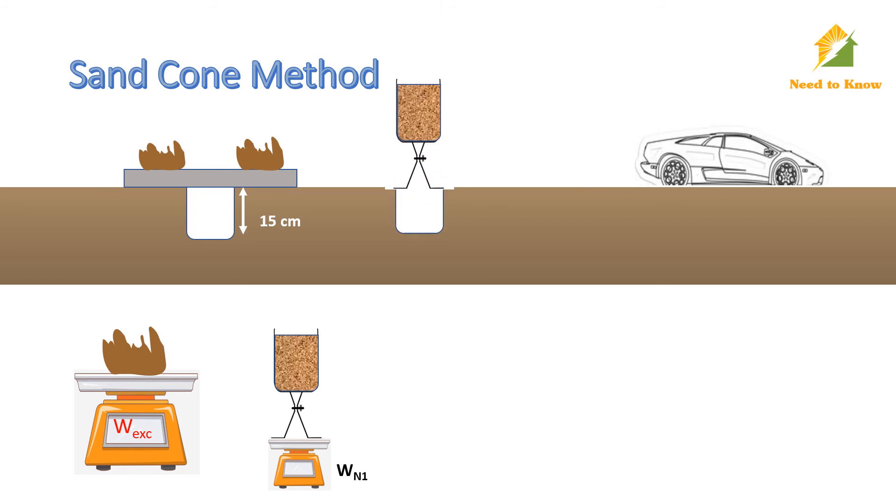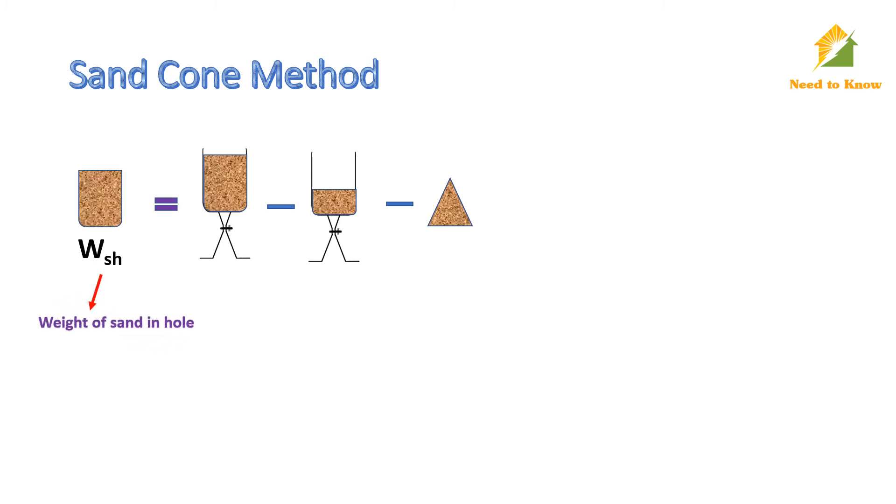Place the setup over the excavated hole and allow the sand to fill the hole. After filling the hole, weigh the setup again and note it as W sand 2. Now, if we remove the weight of remaining sand and the weight of conical heap of sand from filled sand apparatus, we can get the weight of calibrated sand which filled the hole and can be noted as W sand hole.